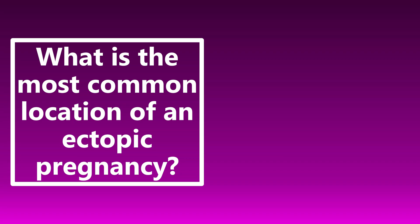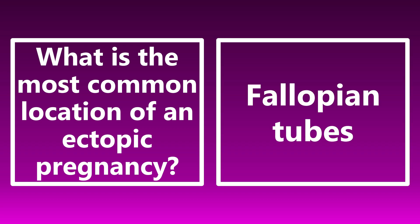The most common location of an ectopic pregnancy is in the fallopian tubes — about 95% of cases. Ectopic pregnancies can occur in a variety of areas in the female GU system and elsewhere in the body, including cervical, ovarian, or even abdominal locations, but the most common is the fallopian tubes.